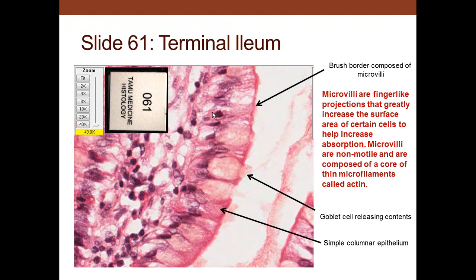In the terminal ileum, we see a brush border with microvilli projecting into the lumen, and terminal bars at the cell junctions. Microvilli are finger-like projections that greatly increase the surface area for absorption. They are non-motile, composed of actin microfilaments. In the intestine we see goblet cells and intestinal absorptive cells — the absorptive cells have a brush border of uniform-sized microvilli, while goblet cells also have microvilli but the brush border cells have the most uniform size.